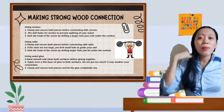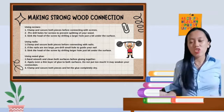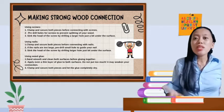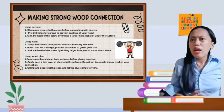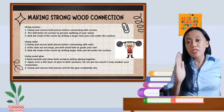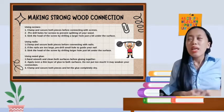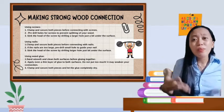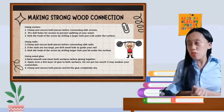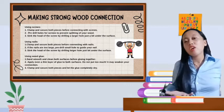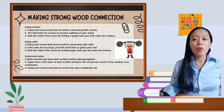Let's proceed to making strong wood connection. Using screws, we can clamp and secure both pieces before connecting with the screw. Number two, we can pre-drill holes for the screw to prevent splitting of your wood. Of course, if there are screws.